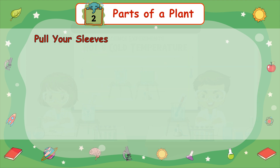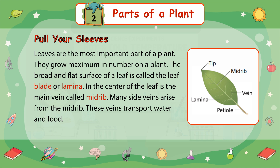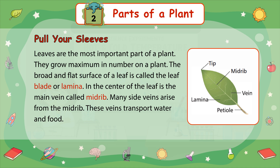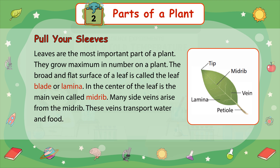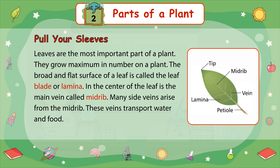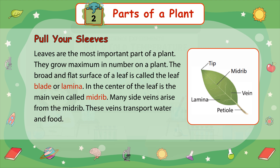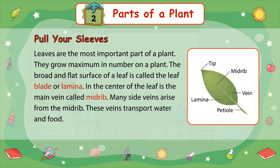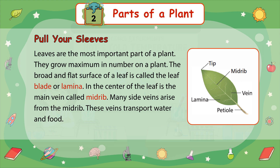Leaves are the most important part of a plant. They grow the most in number on plants. The broad and flat surface of a leaf is called the leaf blade or lamina. In the center of the leaf is the main vein called mid-rib. Many side veins arise from the mid-rib. These veins transport water and food.